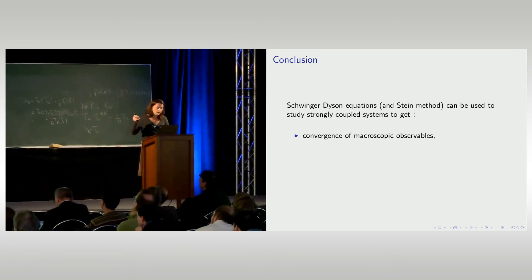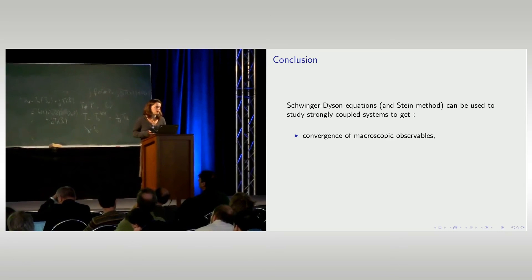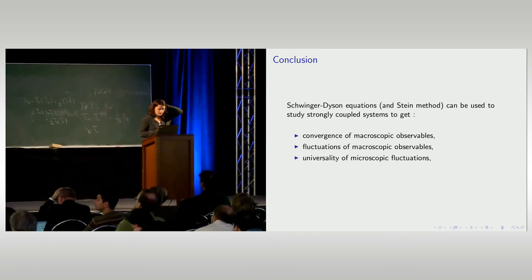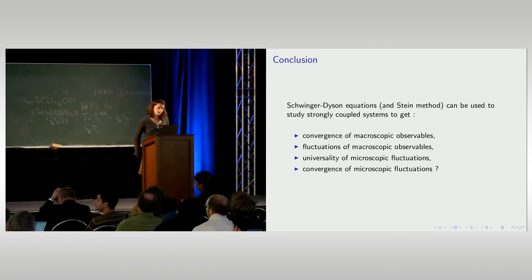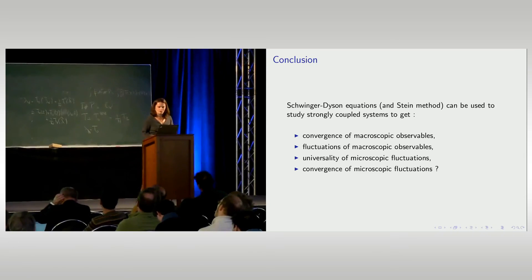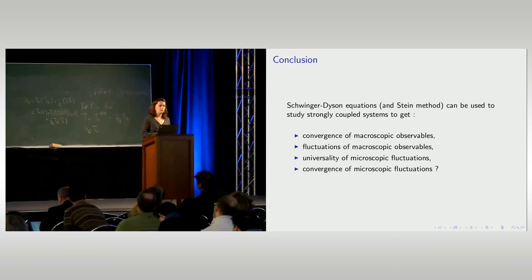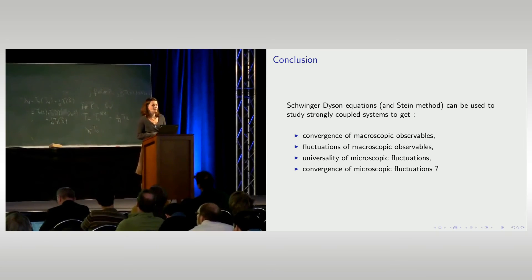As a conclusion: this Stein-method or Schwinger-Dyson equation approach can be used to study strongly coupled systems. You can get convergence of macroscopic observables, fluctuations (Gaussian), and eventually universality by extending the method. The big open question is whether we could get convergence of microscopic fluctuations — getting rid of the determinantal or Pfaffian machinery — and develop a method to prove convergence to, for instance, the Tracy-Widom law. Thank you very much for your attention.